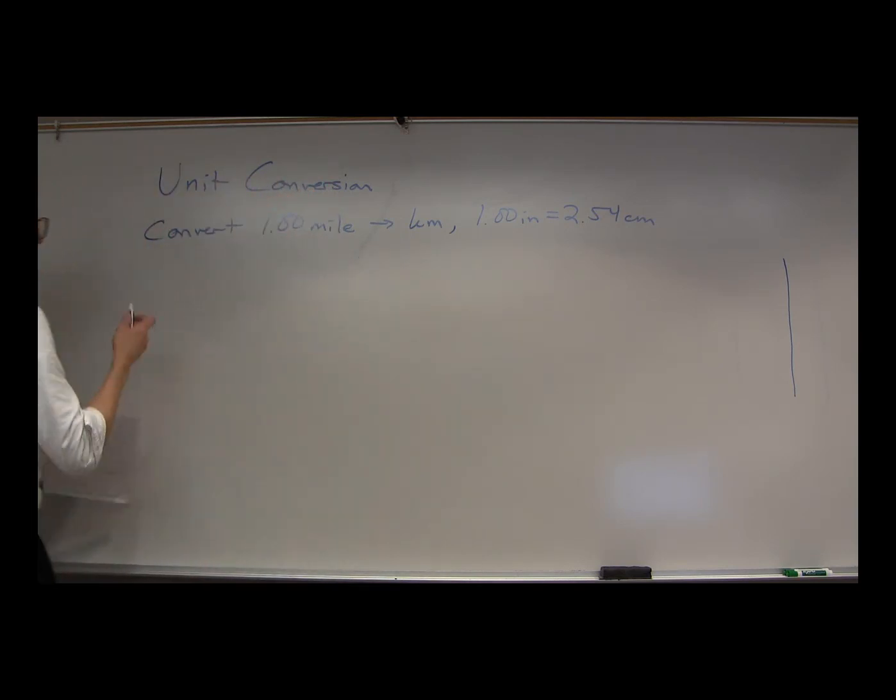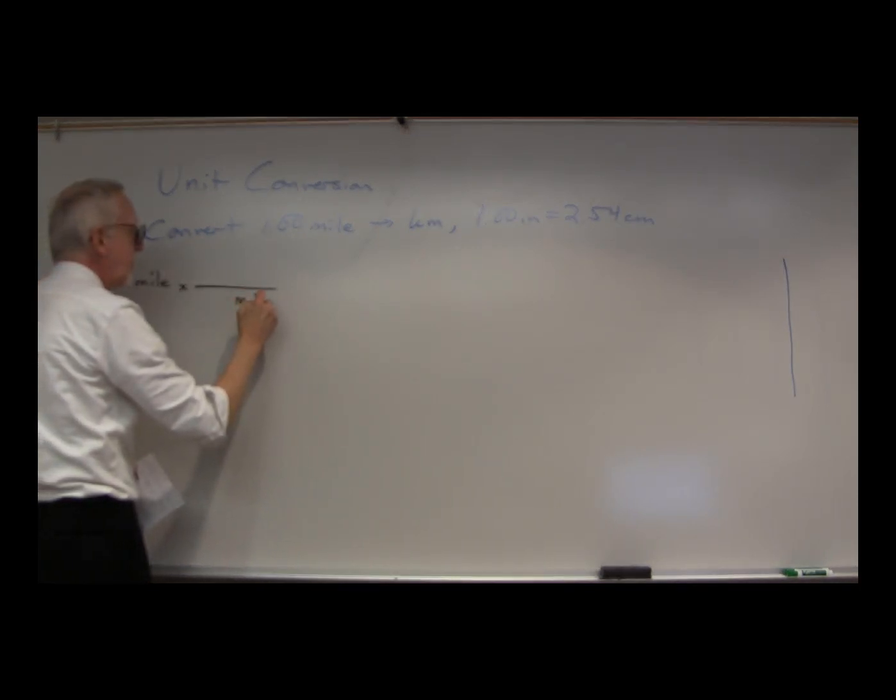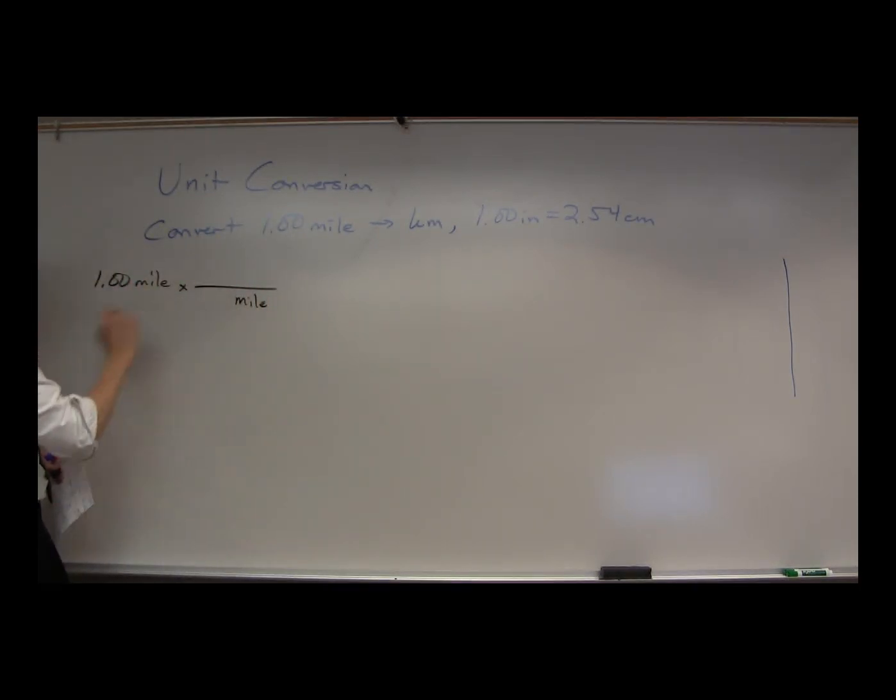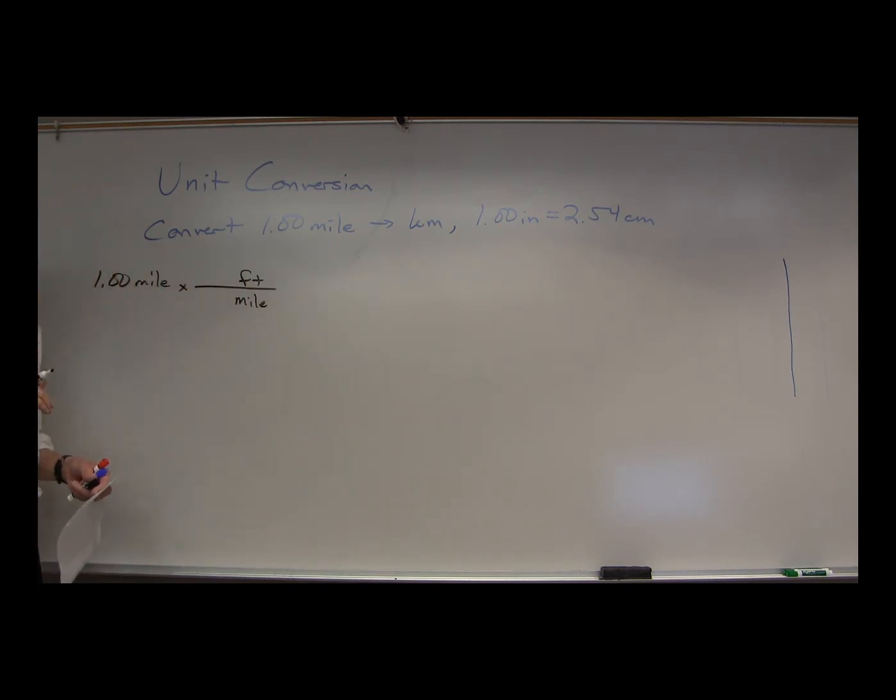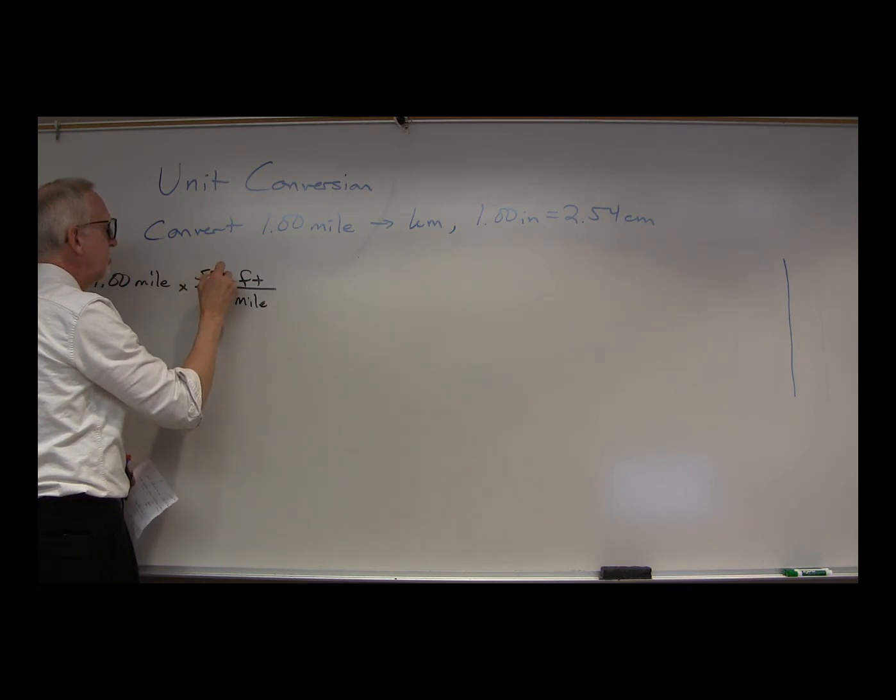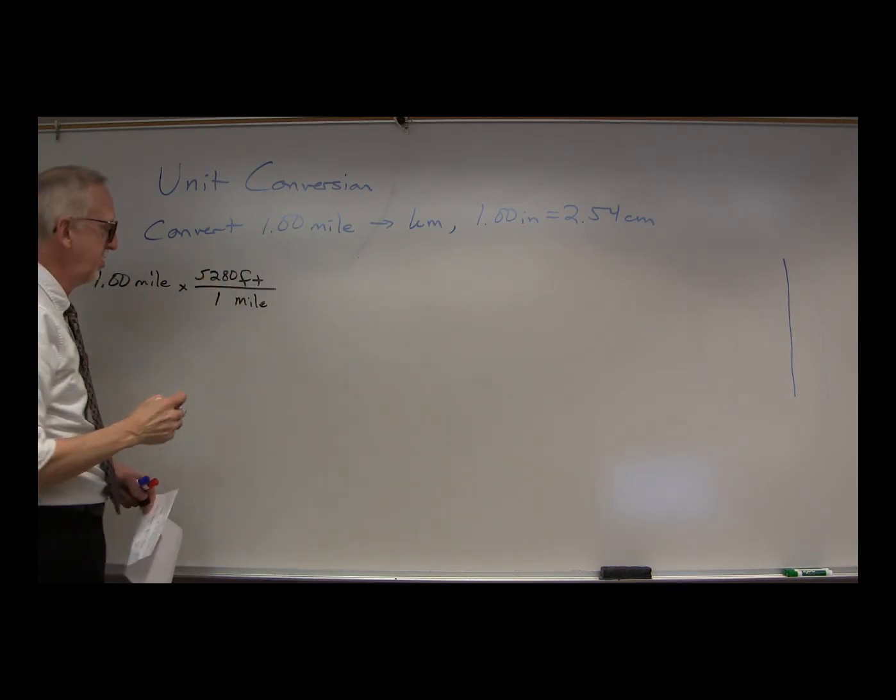So we'll start with one mile. Now we're going to convert that to feet. So we're going to multiply by a conversion factor. To get rid of the miles, we need to put the mile in the denominator so it cancels top and bottom, and feet in the numerator. If you don't remember the conversion factor for feet and miles, one mile is 5,280 feet, and that's another definition. And then the miles will cancel.